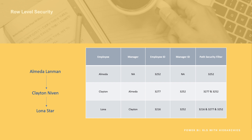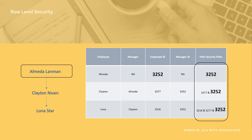When we select Almeda we are selecting employee ID 3252. 3252 is going to appear in every layer of the hierarchy, so in all three rows we can see Almeda's employee ID. That means Almeda is going to be able to see all three rows.